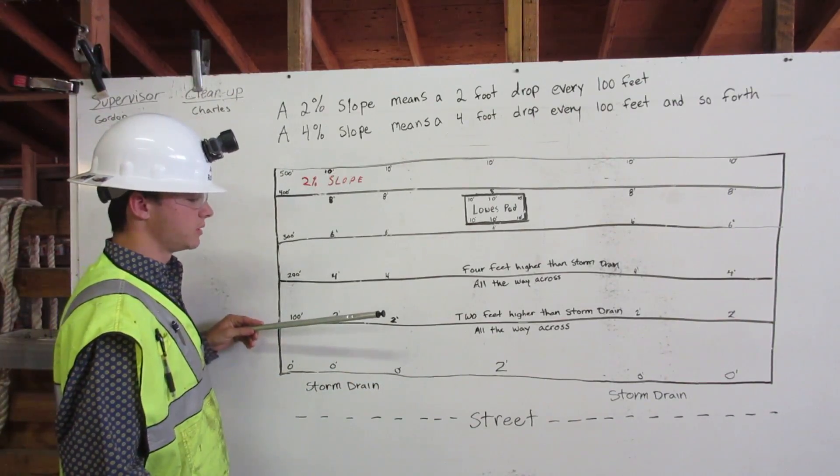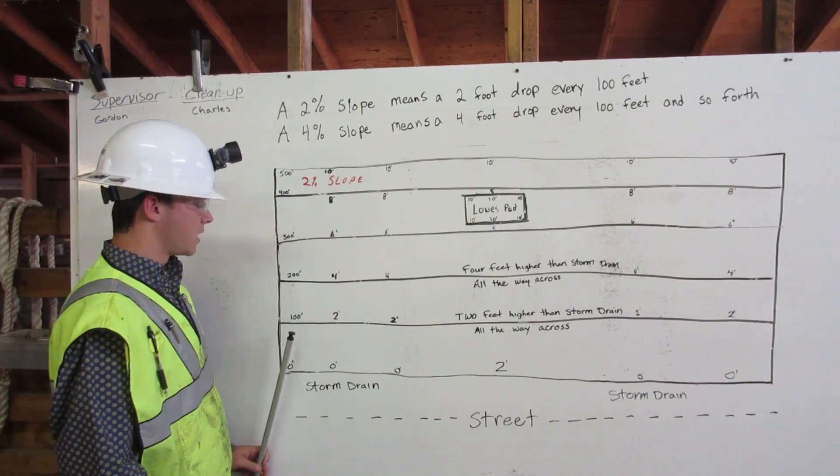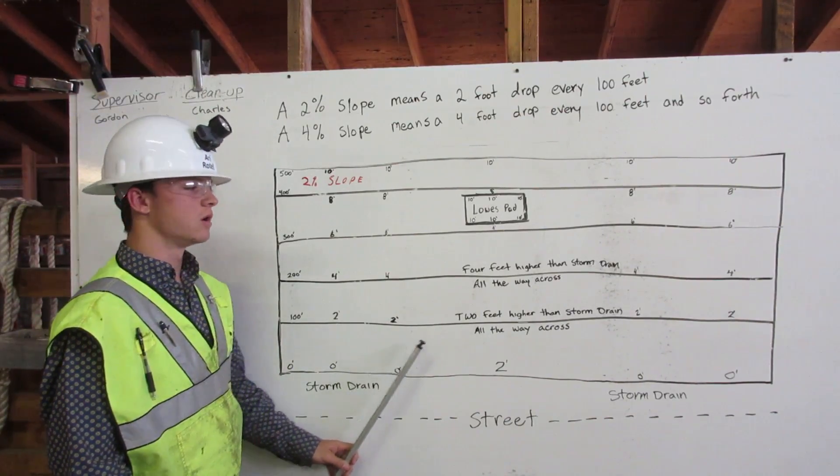Here we have a 2% slope of the lowest parking lot, a storm drain, and the street. At 100 feet from the storm drain, it will be 2 feet higher than the storm drain all the way across.